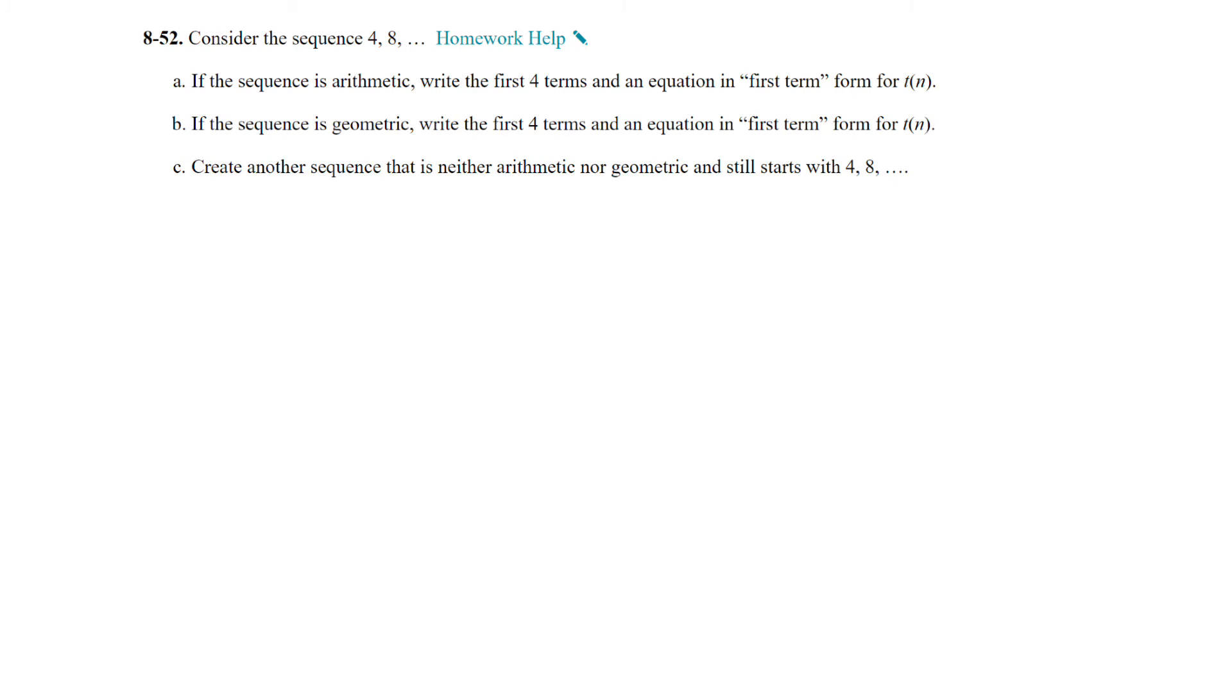Question 52. Consider the sequence 4, 8. If the sequence is arithmetic, write the first four terms and an equation in first term form. So if it is arithmetic, and we don't have enough information to say one way or another because there's only two terms, but if it is arithmetic we are adding 4. So the next terms would be 12, 16, 20, and 24. It says write the first four terms. Well, I did a couple extra. There we go. And then an equation. So our equation in first term form would be t of n is equal to, we are adding 4, so 4 times, and then since we are doing first term form, n minus 1 plus 4 because the first term is 4.